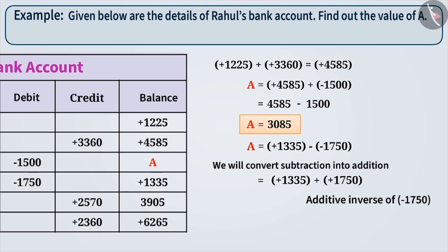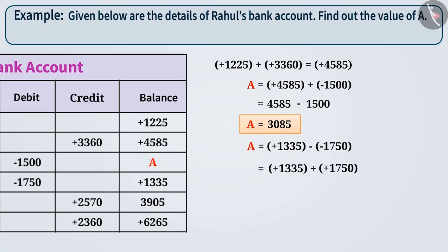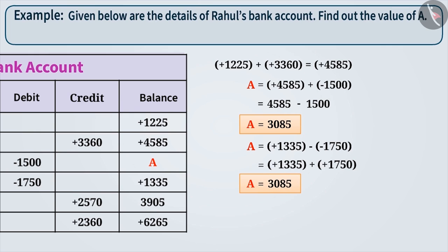which is plus 1750. Here, both the signs are the same. Therefore, we add both the numbers, ignoring the sign, and the result will be 3085. Now, add the common sign plus to the result. This is the value of A.